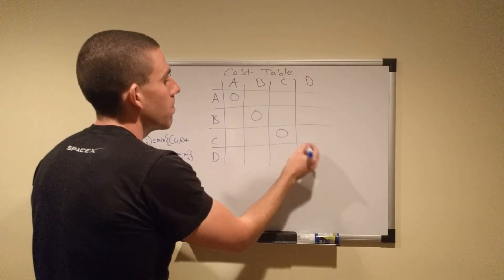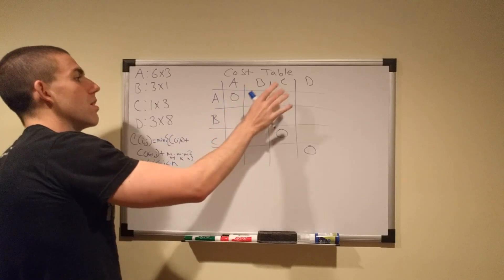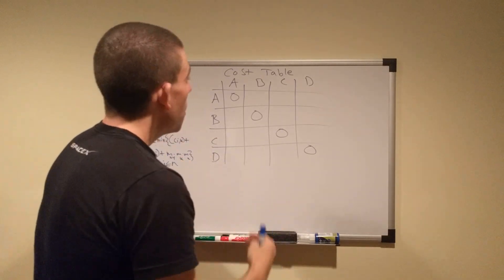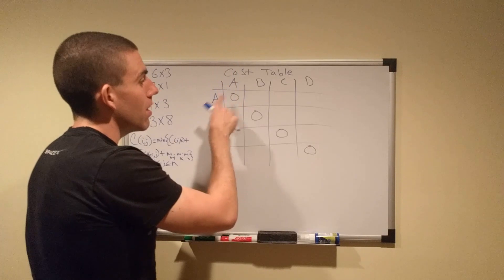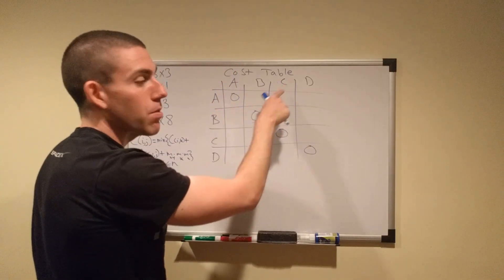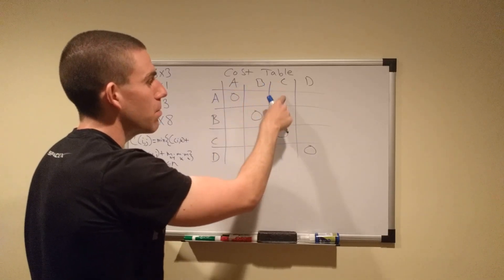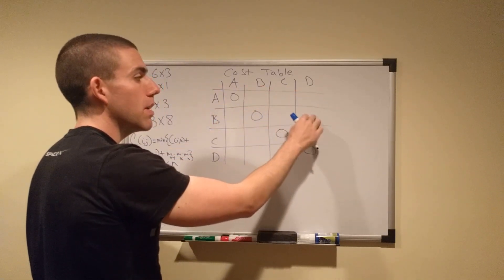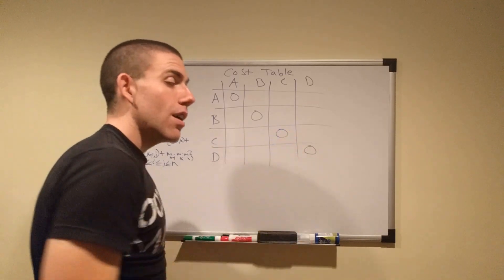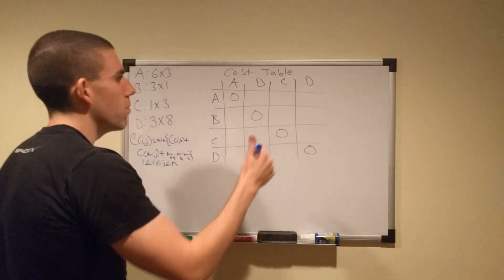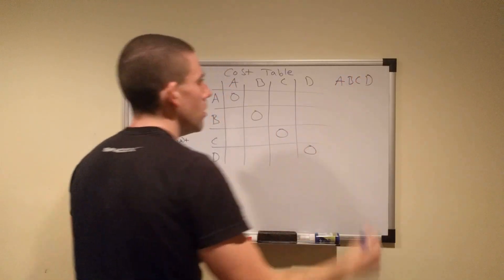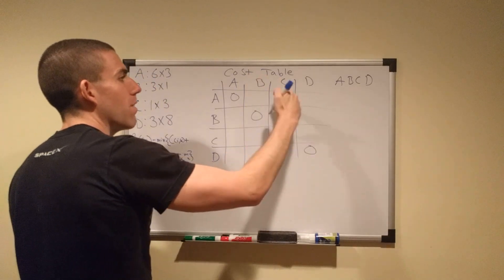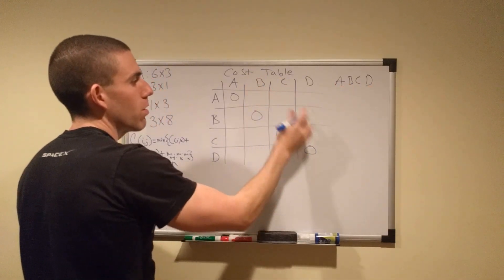So the format of this matrix is that each cell is going to contain the cost of performing the multiplication indicated by that cell. But how do we read it? Obviously this is A times B, but what is this? This is not A times C. This is A times B times C, and this is A times B times C times D. So these refer to complete products. So here we have B times C, and then B times C times D, and then C times D.